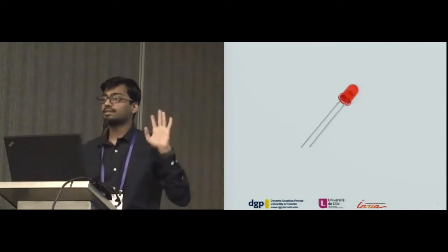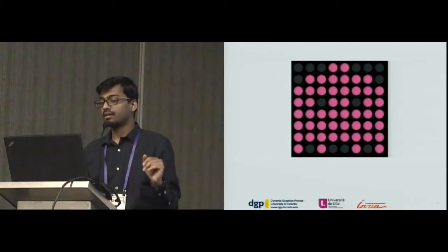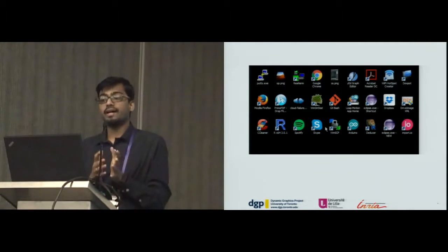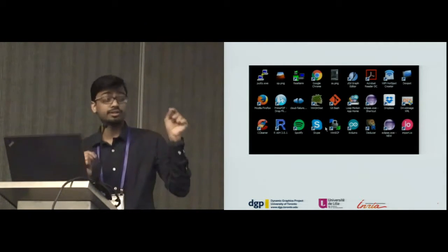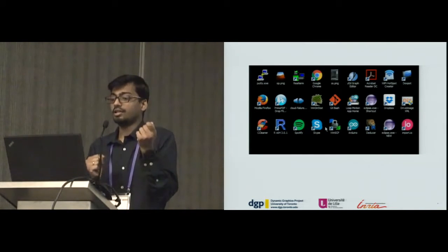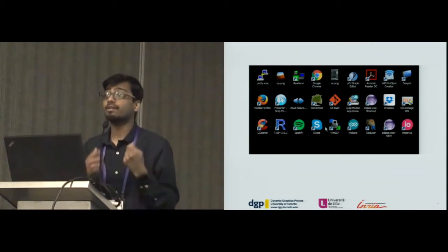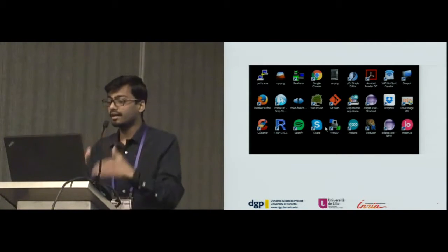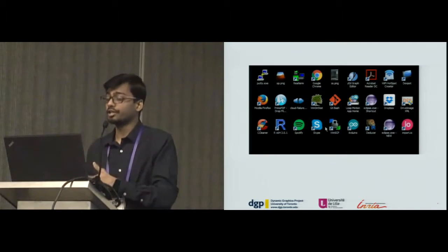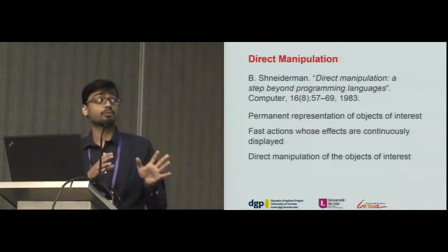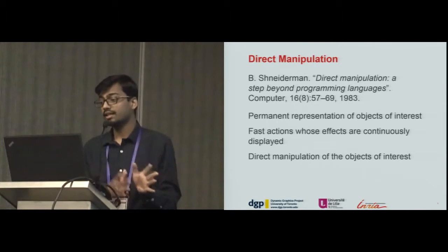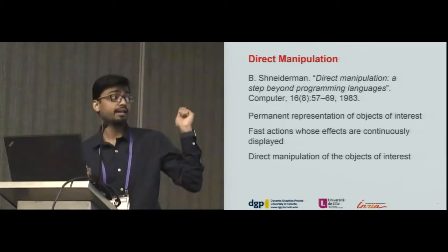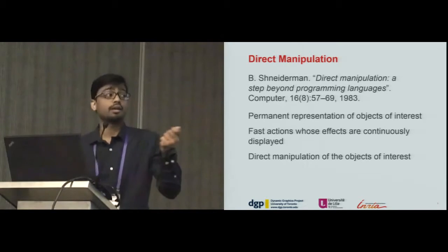A single light source is the most basic form of a visual display. When we combine multiple light sources, we get something like a light board. A huge leap from that is the visual display we use today — it has light sources so small that they feel continuous to us. And not only do we see it, we interact with it constantly, back and forth. The fundamental concept that underlies our interactions with such visual displays is direct manipulation. Direct manipulation as a concept was defined by Shneiderman in 1983, and its core principles are: the permanent representation of the objects of interest, fast actions whose effects are continuously displayed, and direct manipulation of the objects of interest.